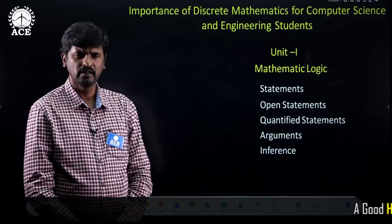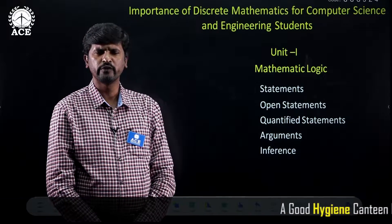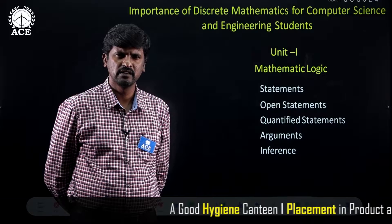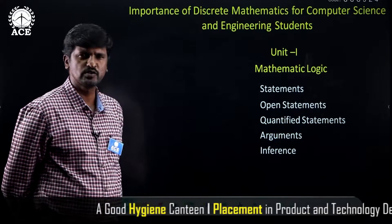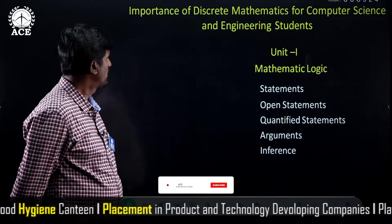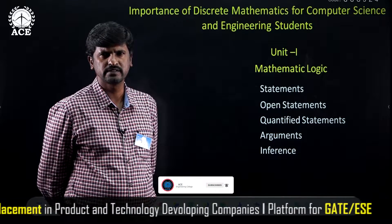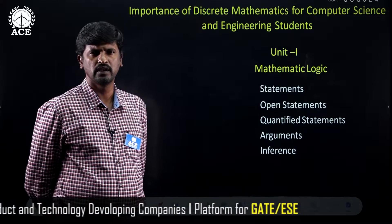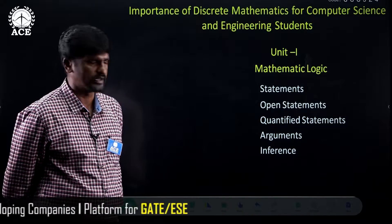Hi everyone. I am going to give you an overview and importance of discrete mathematics for computer science and engineering students and allied branches. Discrete mathematics has five units, and I am going to give you the overview and importance of every unit.